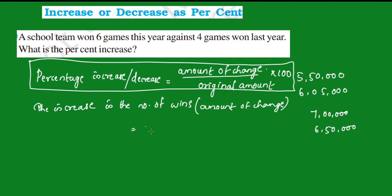For example: if a number goes from 4 to 6, that is an increase. 6 minus 4 equals 2, so the amount of change or increase is 2. Now we calculate the percentage increase: the amount of change is 2.